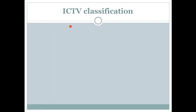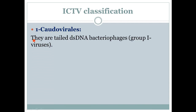The first order in ICTV classification is Caudovirales. 'Caudo' means tail, so Caudovirales refers to viruses that have a tail. They are tailed double-stranded DNA bacteriophages and are placed in Group 1 viruses.